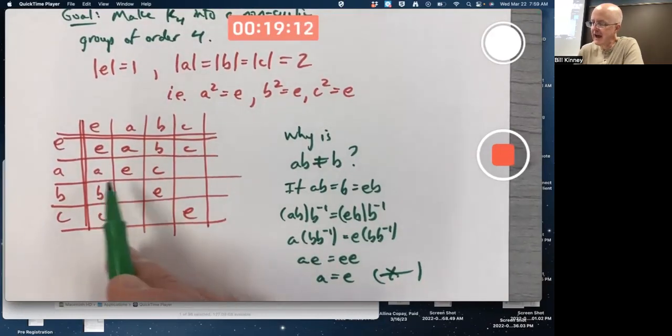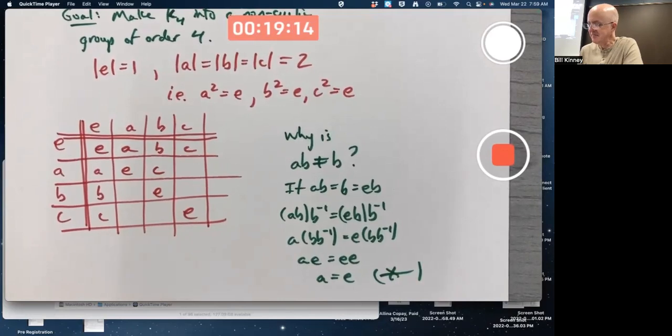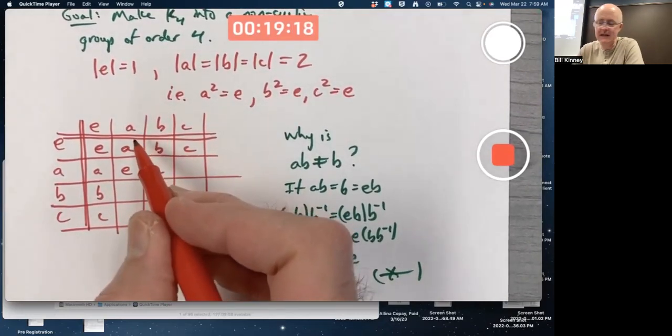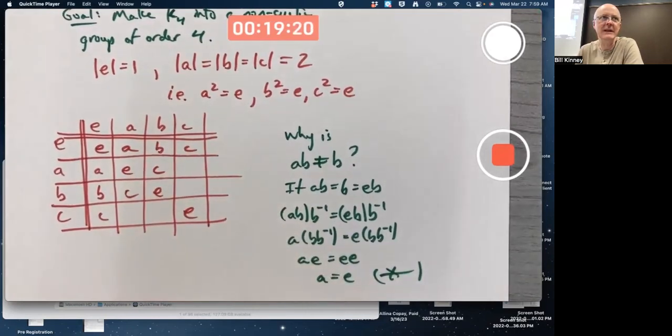I'm assuming all these letters are distinct group elements. So A times B would have to equal C. And by an analogous argument, B times A would have to equal C as well.